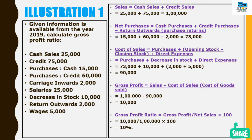Instead of giving separate amounts of opening stock and closing stock, here the stock information is given as a decrease in stock value, so we take that out. Then we add direct expenses: carriage inwards 2,000 plus wages 5,000. Adding together: 73,000 plus 10,000 plus 2,000 plus 5,000 gives a total of 90,000, which is the cost of goods sold.